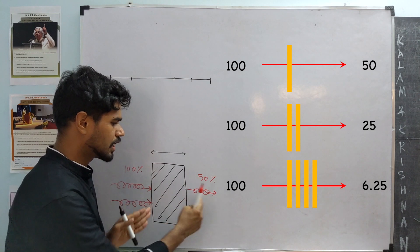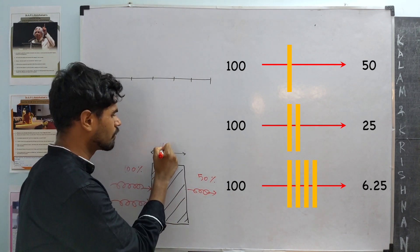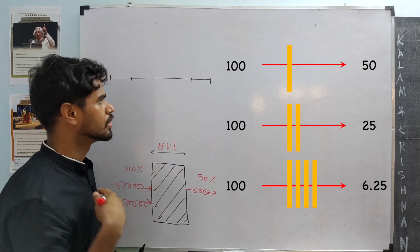Now, the thickness at which attenuation is 50% is known as half-value layer.